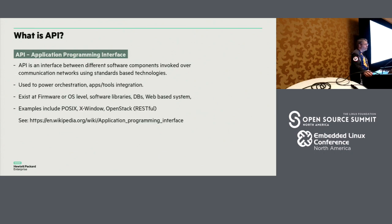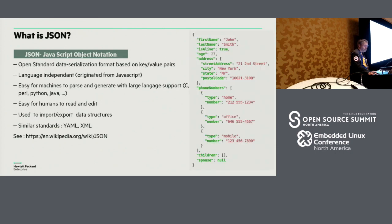We are also talking about API — an application programming interface — which means a standard way to communicate between software components, between a client and a server, typically. Such as what you can find around X Window, POSIX for Unix systems, or OpenStack, which is based on standard APIs and creates standard APIs for the cloud environment.